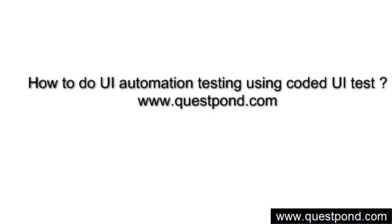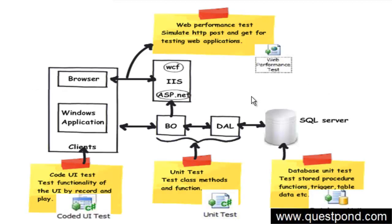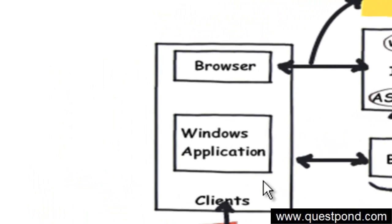In the previous video, we saw how we can use unit testing to test our normal .NET classes, i.e., our business objects as well as data access layer. One of the important components of our project is user interfaces, and you can have different kinds of user interfaces like an ASP.NET application, a Windows application, a WPF application, or a Silverlight application. In this video, we will see how we can do testing for the UI part of your project.